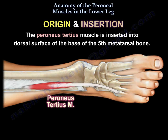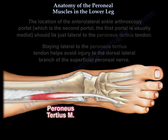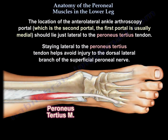The perineus tertius muscle is inserted into the dorsal surface of the base of the fifth metatarsal bone. The location of the anterolateral ankle arthroscopy portal — which is the second portal, as the first portal is usually medial — should lie just lateral to the perineus tertius tendon. Staying lateral to the perineus tertius tendon helps to avoid injury to the dorsal lateral branch of the superficial perineal nerve.